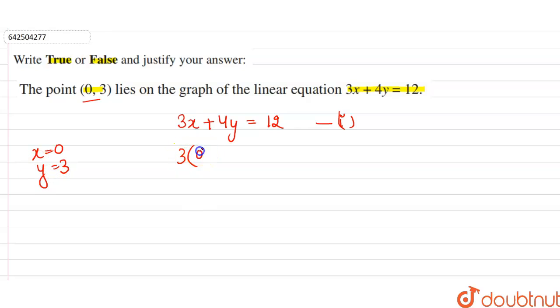This is equal to 3 × 0 + 4 × 3. Right, so this is equal to 3 × 0 is 0 and 4 × 3 is 12. Right, so 12 on the left hand side the value of 3x + 4y is 12, and on the right hand side it's 12.